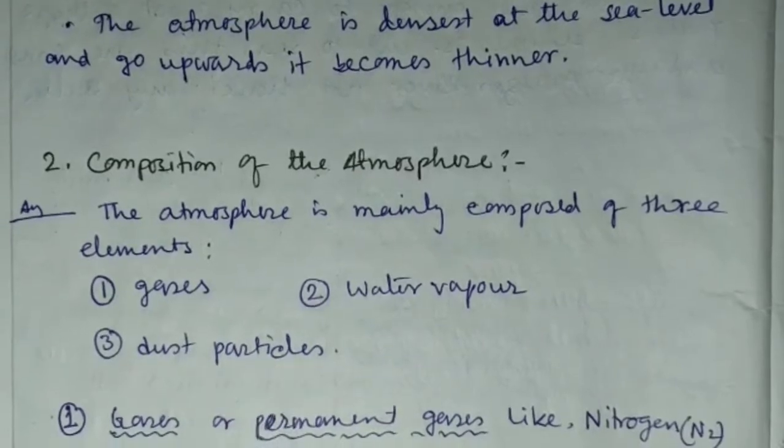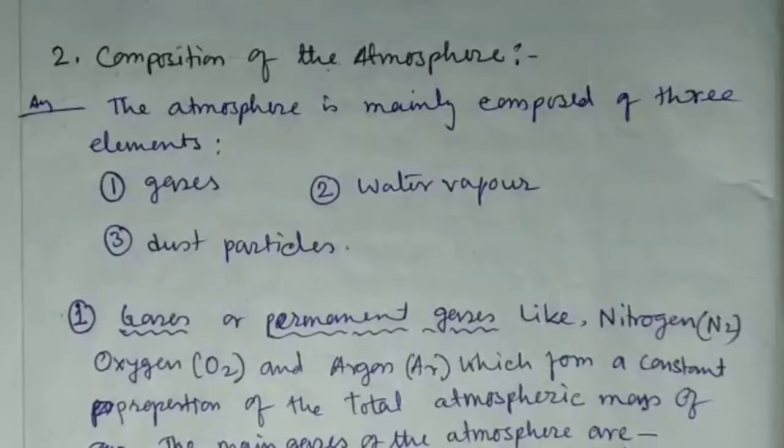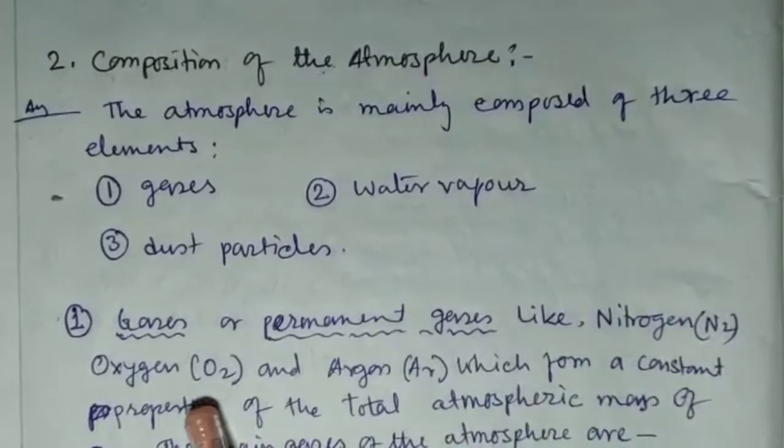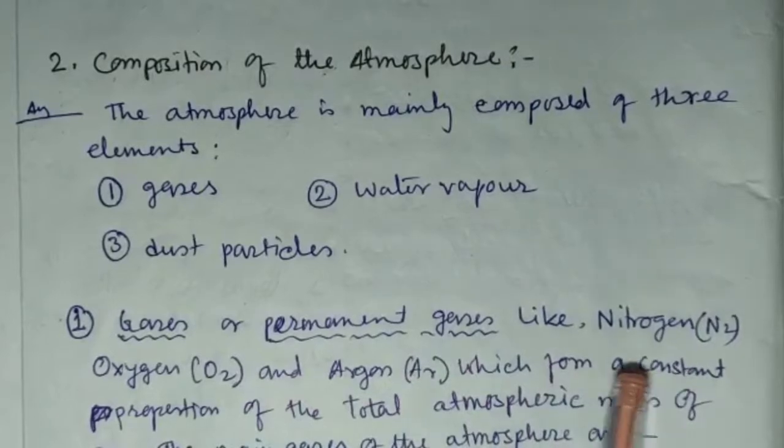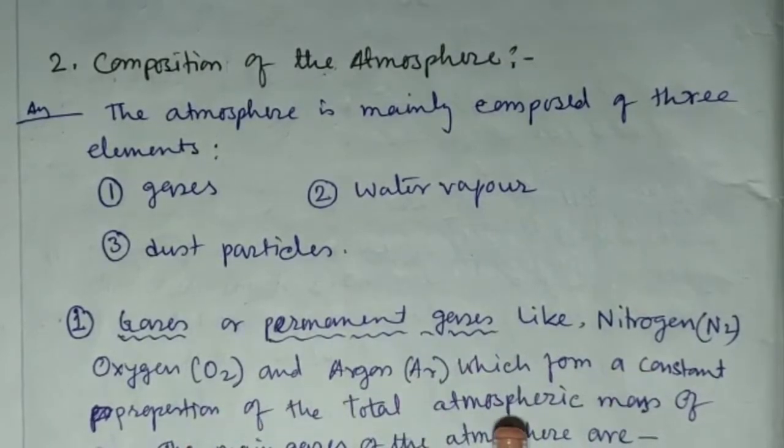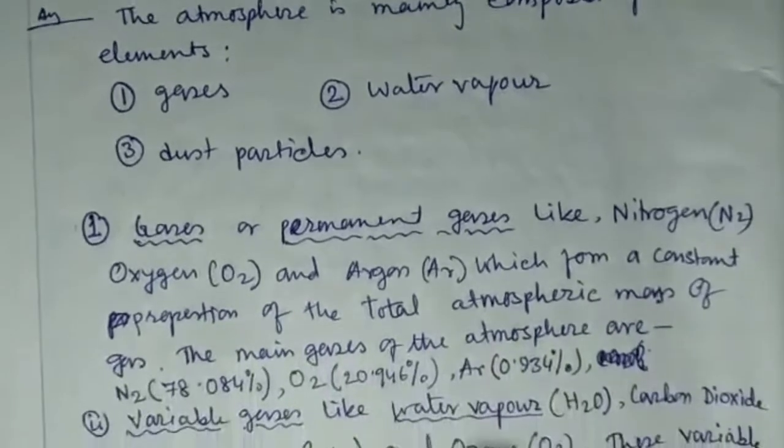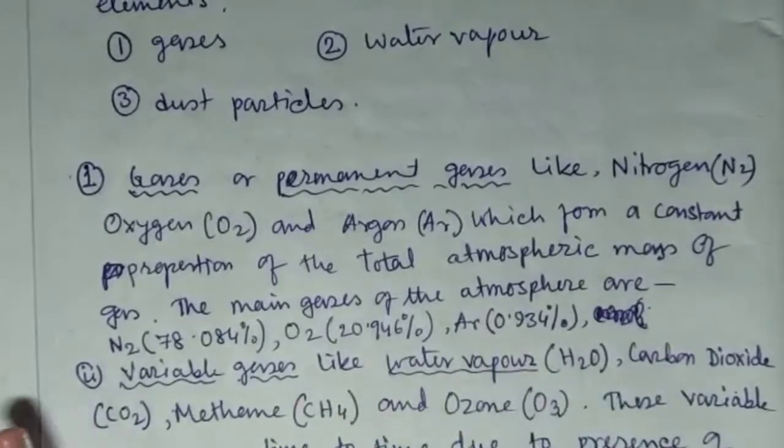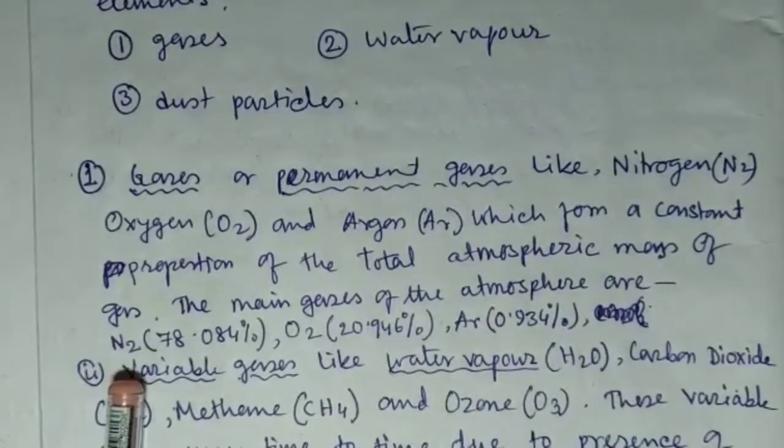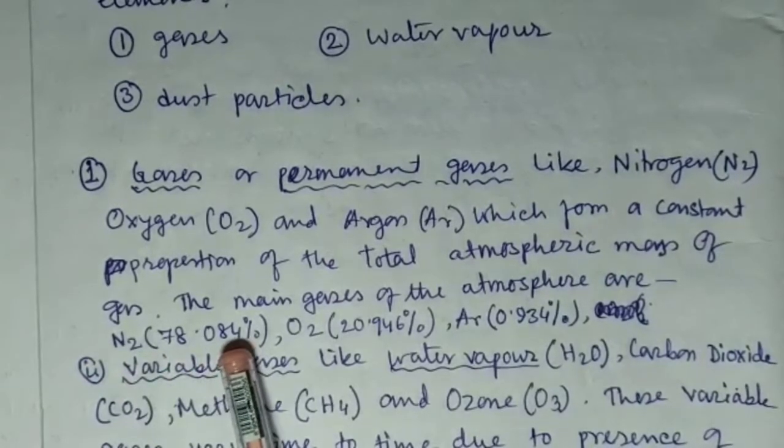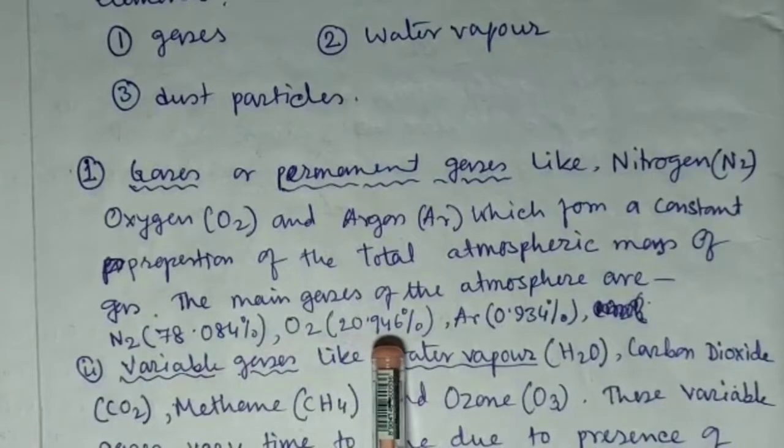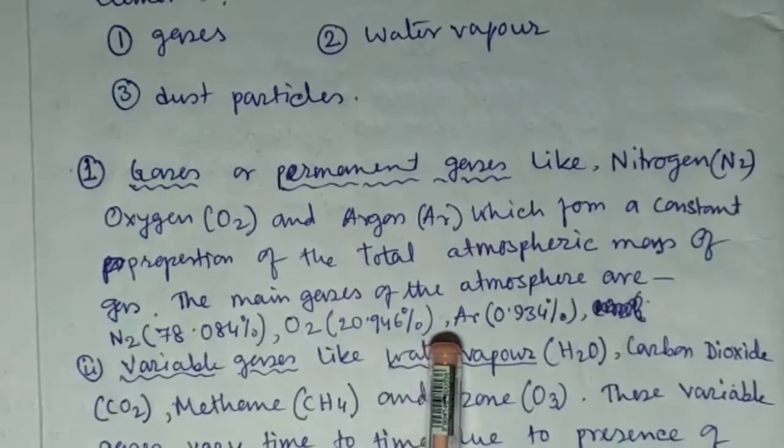The gases are permanent gases like nitrogen, oxygen, and argon which form a constant portion of the total atmospheric mass of gases. The main gases of the atmosphere are nitrogen 78.084%, oxygen 20.946%, and argon.